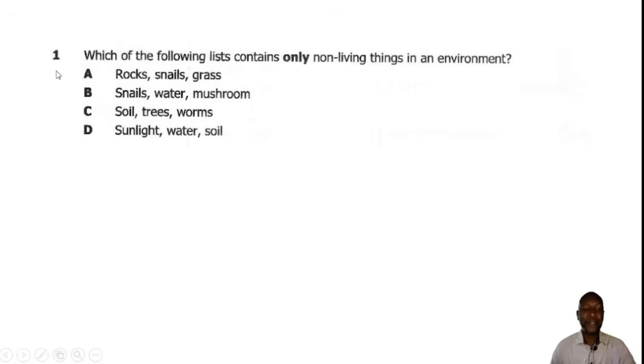Question 1. Which of the following lists contain only non-living things in the environment? So non-living things are what I refer to as the abiotic factors. The abiotic factors will contain sunlight, water, soil, as well as the air. So the correct answer here is A.